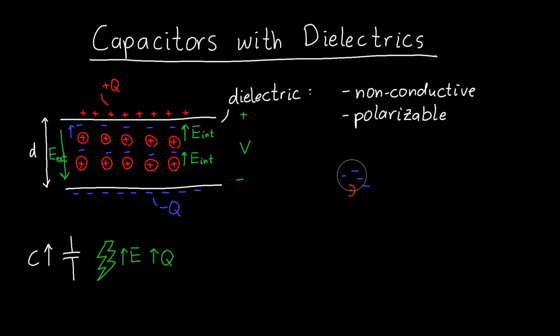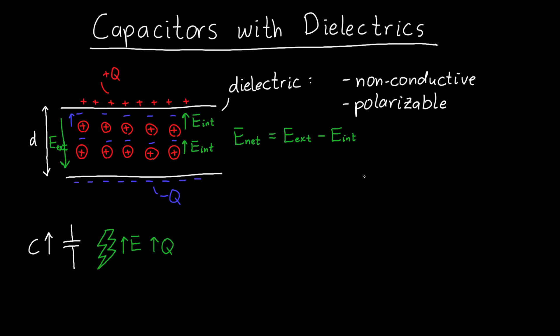So the overall electric field, which let's call the net electric field, is just my external electric field minus my internal one. Now for materials that are what's called linear, it turns out that this internal field actually gets larger as the external field gets larger.